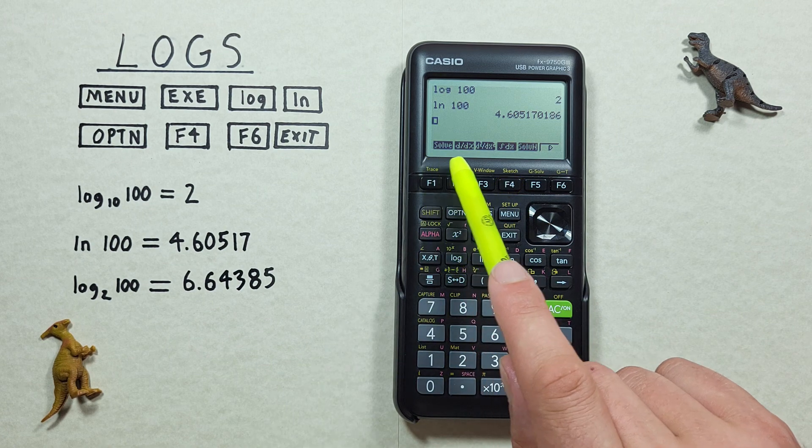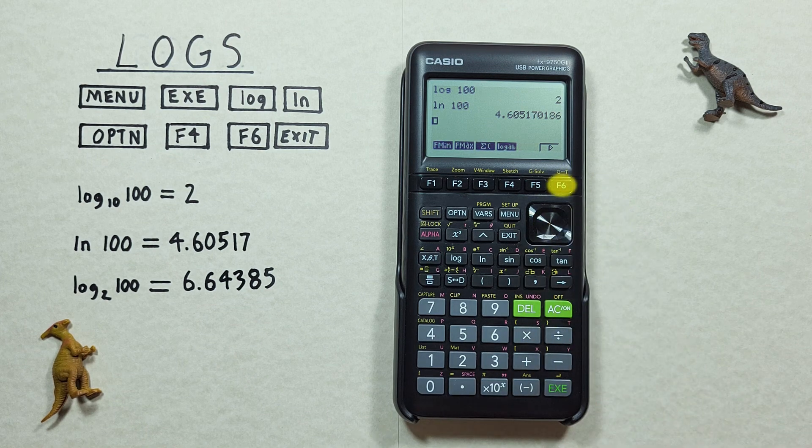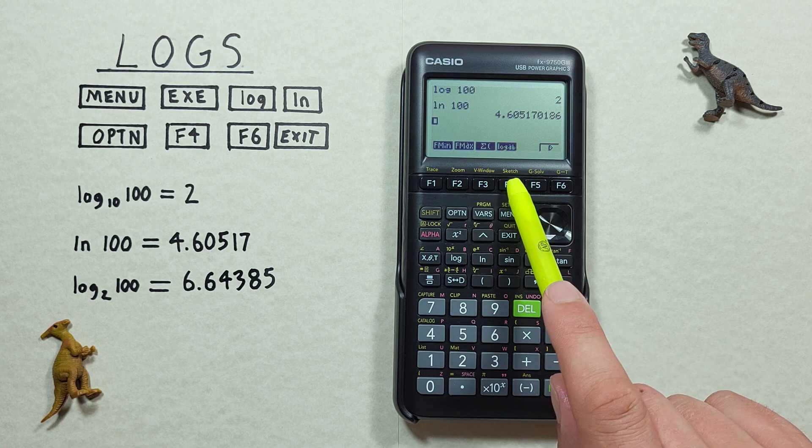That brings us to this menu here. And then we press the F6 key to go to the next menu. And we see this log AB. This is what we want. So we press F4 again.